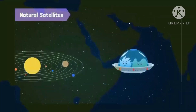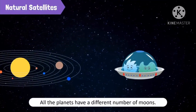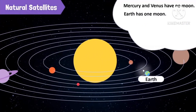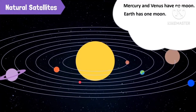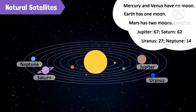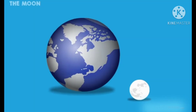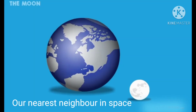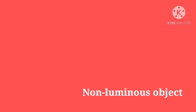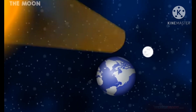Some other planets of our solar system have more than one natural satellite. Saturn and Jupiter are known to have a very large number of satellites, or moons, which revolve around them. The Moon is our nearest neighbor in space and is a non-luminous object, meaning it does not have its own light — it only reflects a part of the sunlight it receives from the Sun.